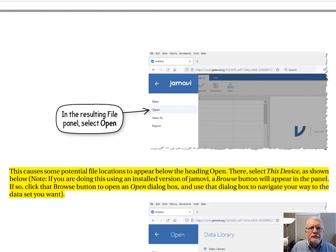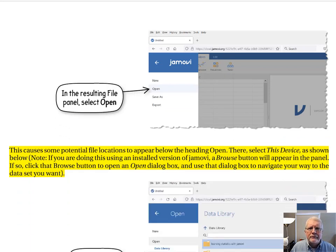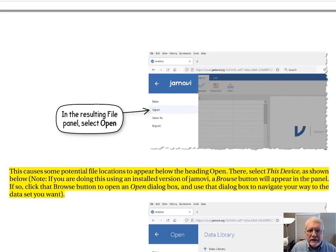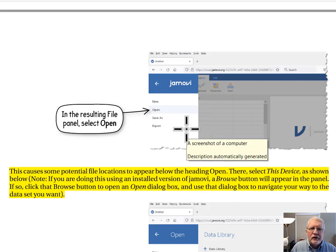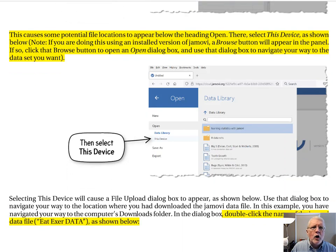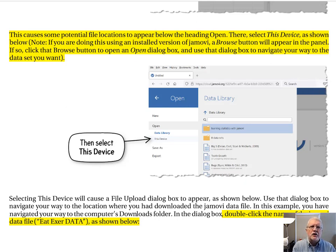In the lecture notes, I'm on page four at the top. When I clicked that air vent icon, it produced the file panel that lets me do things related to files. In this file panel, my next task is to click Open. Clicking Open causes some potential file locations to appear below the heading Open. There, select 'This Device.'